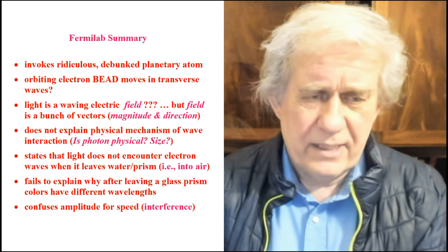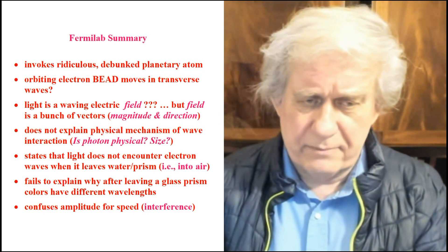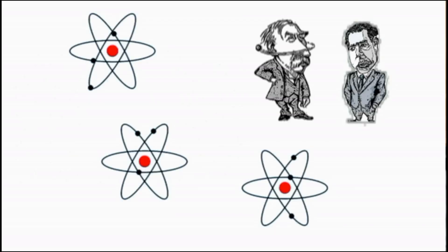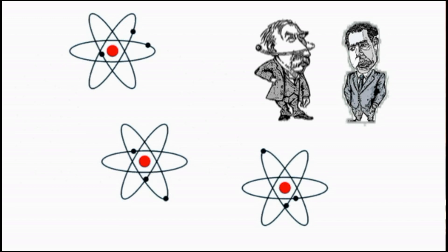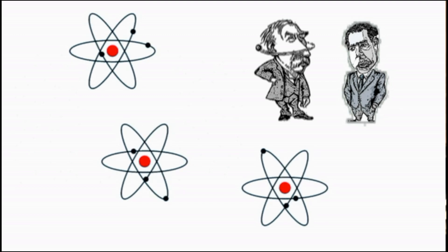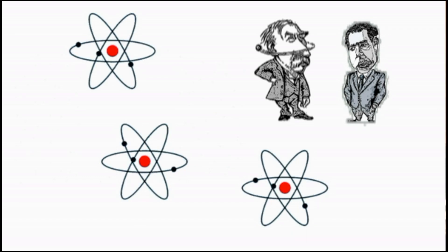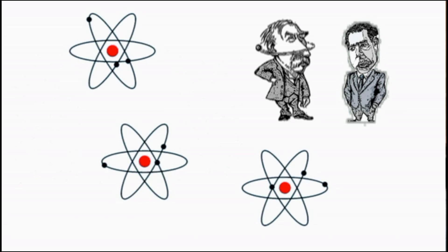Here it is — this is from their site, by the way. I'm not putting words in their mouth — this is the atom they show. What is it? A bunch of beads. Those ellipses are not wires — those are supposedly the trajectories, the contrails if you will, of the electron bead as it goes around the atom. They always draw them because if you take them out you wouldn't understand the picture. So they leave them in and you think you're looking at an atom. This is the atom that Fermilab and Don Lincoln are going to use.